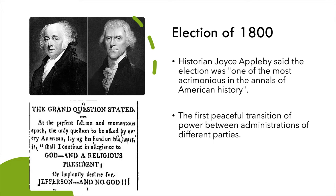What happens after the election of 1800, when Jefferson defeats Adams, is the first peaceful transition of power between presidential administrations of different parties. It of course wasn't the first transition between administrations — Adams had taken over after George Washington retired. But Adams and Washington were both members of the Federalist Party, so there was not a transition of power between parties. In March of 1801, when Jefferson is inaugurated, we get that first peaceful transition between administrations of different political parties, and that's part of the background and context in which Jefferson's first inaugural is delivered.